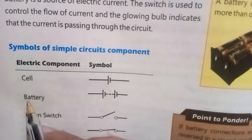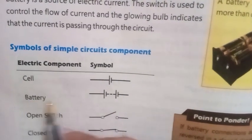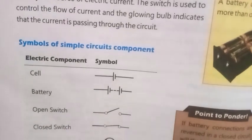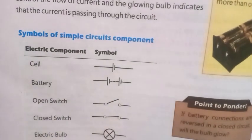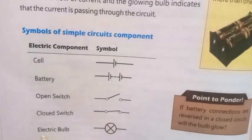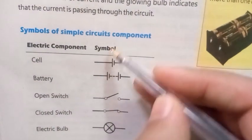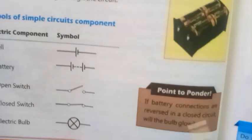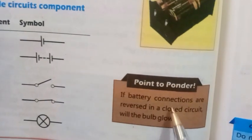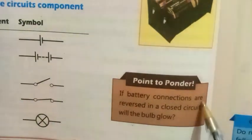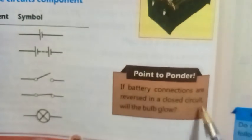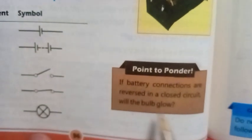Symbols of simple circuit components: cell, battery, open switch, closed switch, and electric bulb. Point to ponder: If battery connections are reversed in a closed circuit, will the bulb glow?